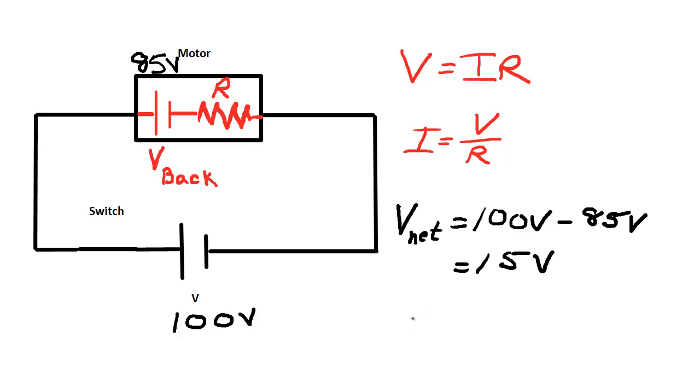So again, I can use Ohm's law and figure out what the current is running through that circuit with this new voltage. The only thing that I've changed is the value of V. Instead of being 100 volts when it isn't spinning, it's now 15 volts. The resistance of the motor does not change.